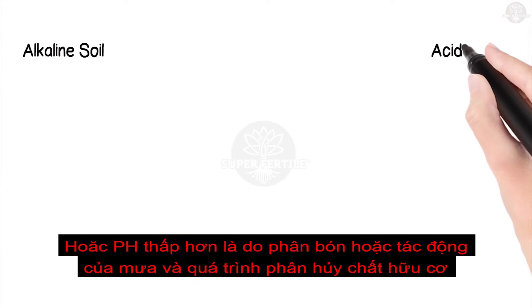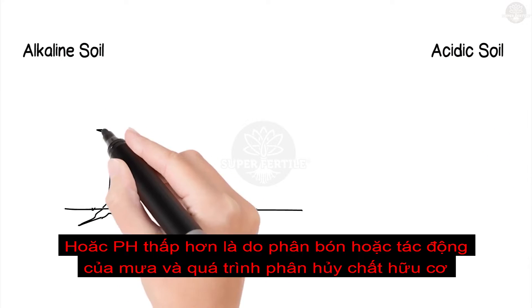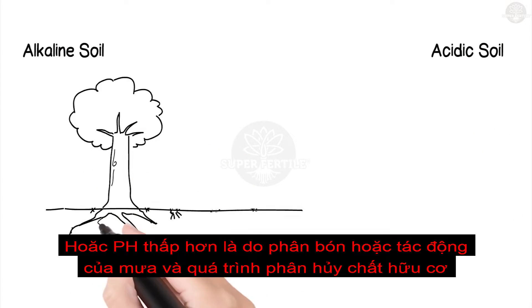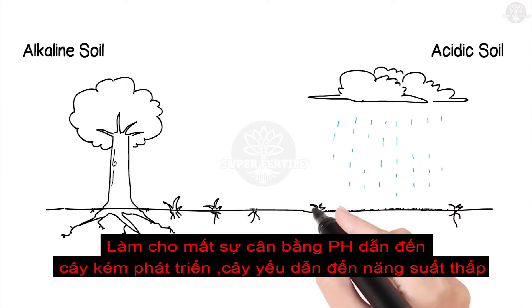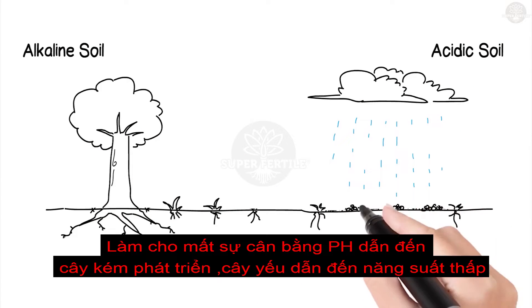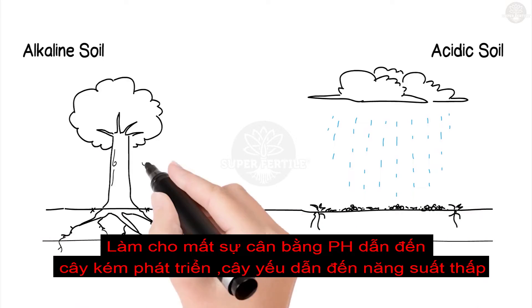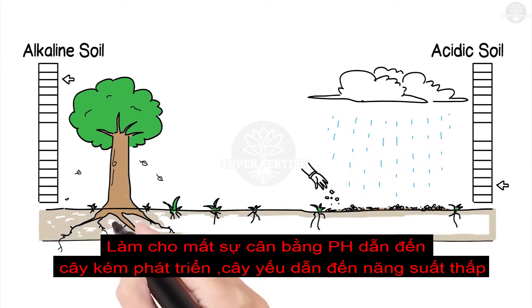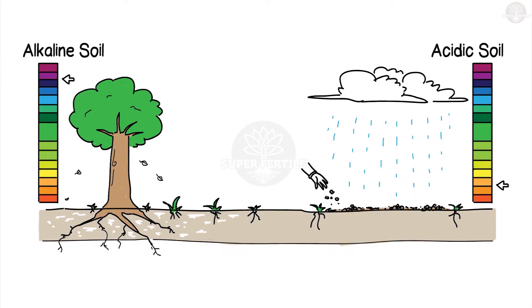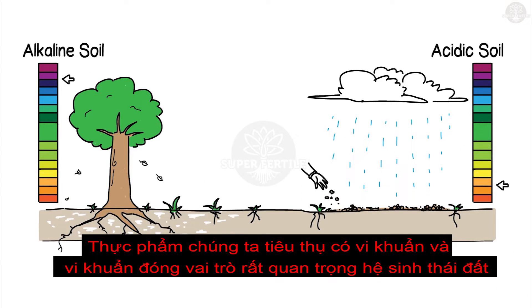Alkaline soil, or higher pH, is typically due to excess calcium carbonate developing in dry environments. Acidic soil, or lower pH, is typically due to fertilizer use, rainfall, and decomposition of organic matter.